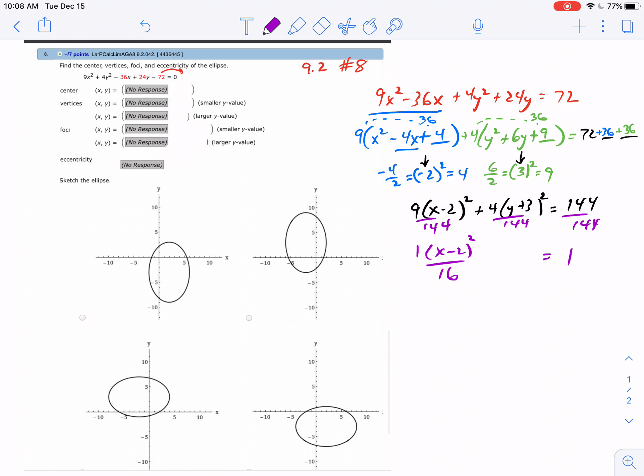And over here, 4 over 144 gives you 36, so this would be (y plus 3) squared over 36. There's your standard form, and now we have to find the center and everything else.